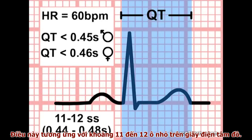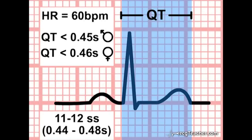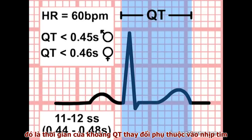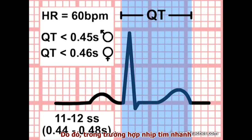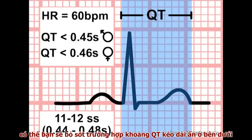These upper limits lie between 11 and 12 small squares on the ECG paper. It is important to realize, however, that the measured QT interval varies with heart rate, becoming shorter as the heart speeds up or longer when the heart slows down. Therefore, particularly at higher heart rates, it is possible to miss an underlying prolonged QT interval.